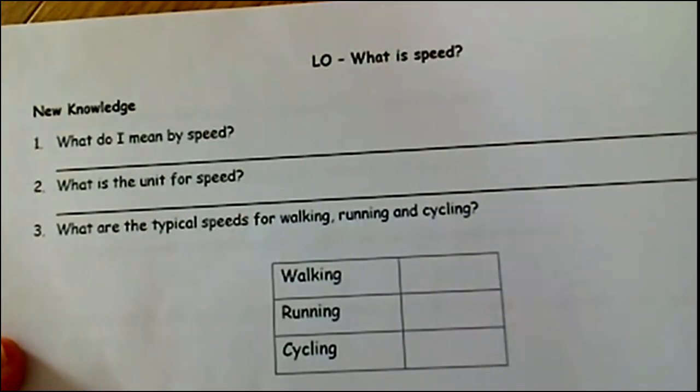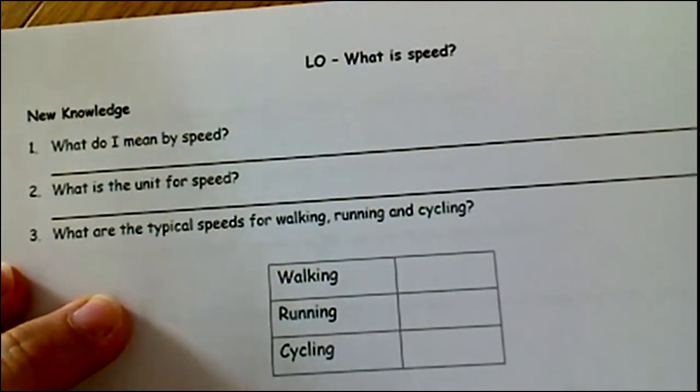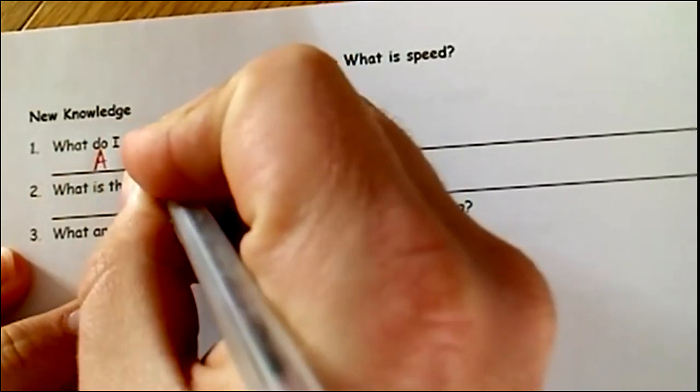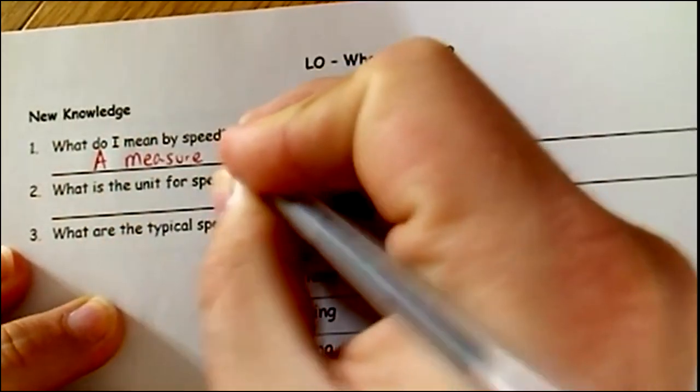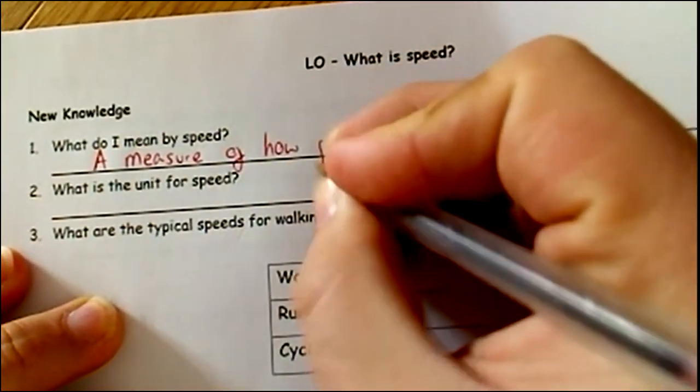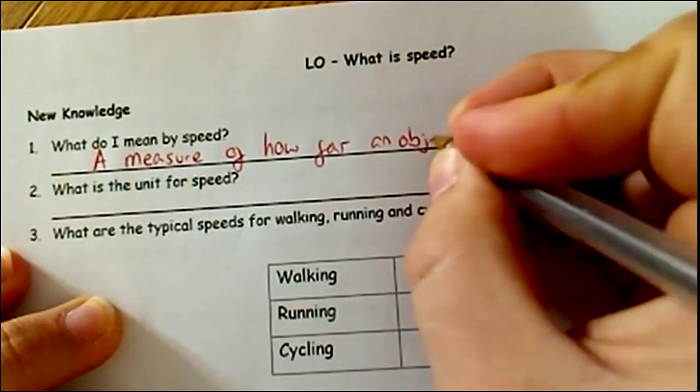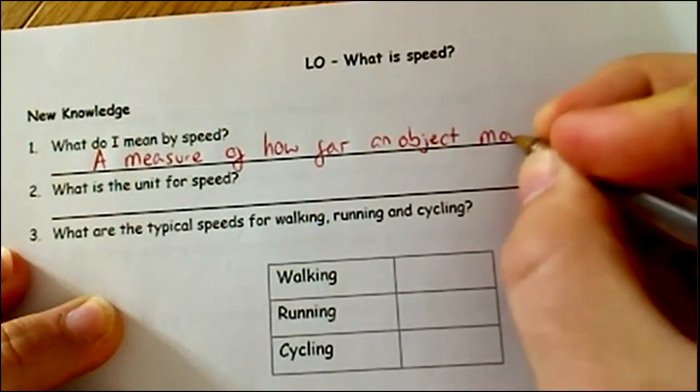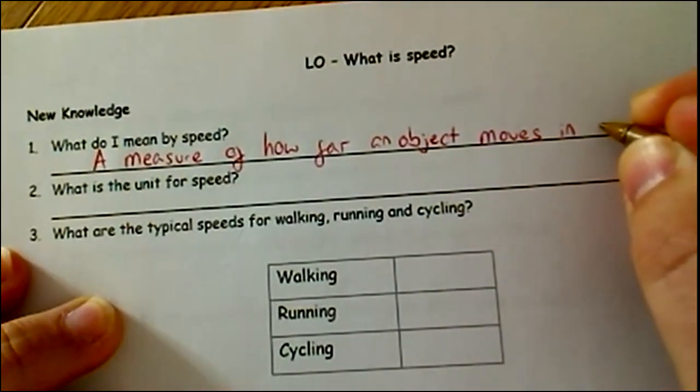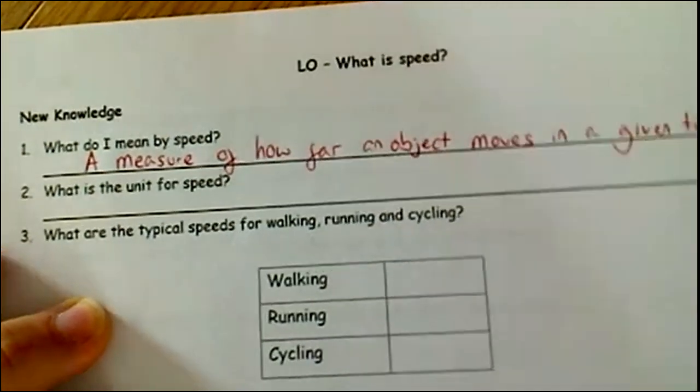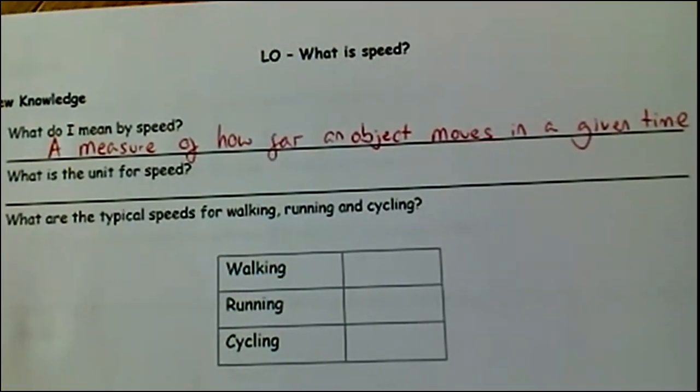Okay. So first of all, what do I mean by speed? Now, hopefully, you've heard the word speed before. But if we're going to write this down, it is a measure of how far an object moves in a given time. So what I mean by speed is a measure of how far an object moves in a given time. So get that copied down for me.